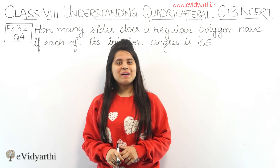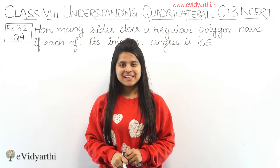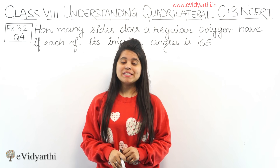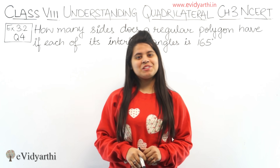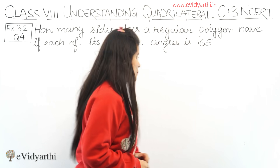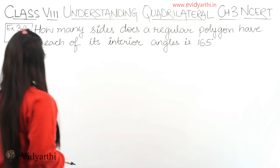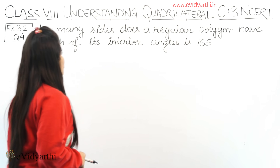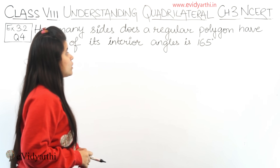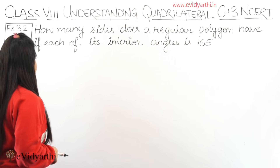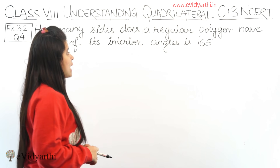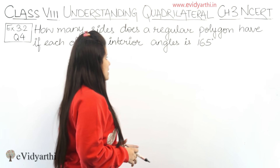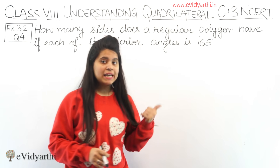Hello everyone, this is Mansi from Evita and E-Tots. Now we are starting with question number 4, exercise 3.2. In this question we have: how many sides does a regular polygon have if each of its interior angles is 165 degrees?